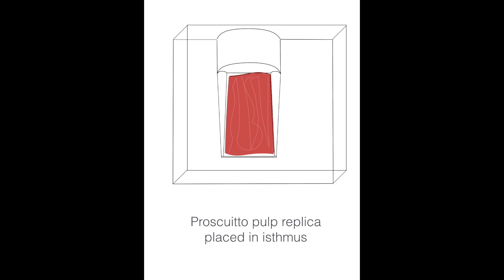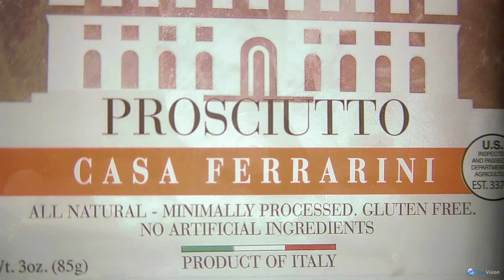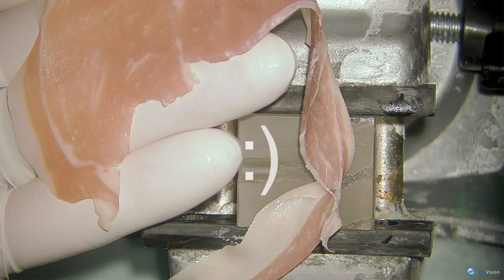Now here comes the fun part. I chose to use prosciutto as a pulp replica, and not just any prosciutto, but this is Casa Ferradini, all natural, minimum processing, no artificial ingredients, and it's also gluten-free.